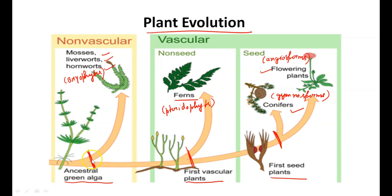At every point we have a common ancestor, as you can see here. If we talk about the first common ancestor, the plants present at that common point might have characteristics of all — algae, bryophytes, and pteridophytes — sharing common characters. At the second common point with vascular plants, the common ancestor might have pteridophyte and gymnosperm characteristics, though not necessarily, because evolution cannot be a straight line.